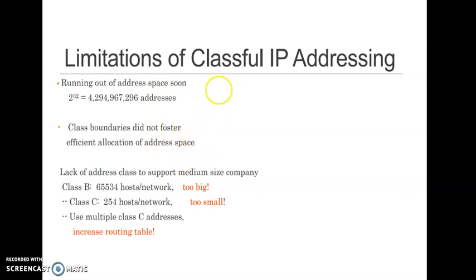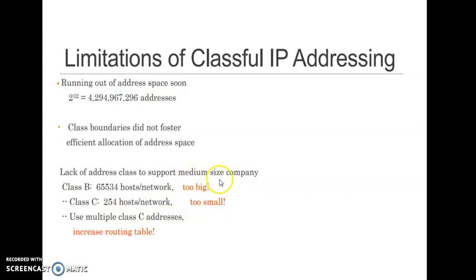The third limitation is the lack of an address class to support medium-sized companies. For example, Class B supports 65,534 hosts per network — too large for most organizations. Class C supports only 254 hosts per network — too small for a medium-sized company. We can't use Class B because it's too big, and we can't use Class C because it's too small. Using multiple Class C addresses increases the complexity of the routing table, which is a major drawback of Classful IP Addressing.